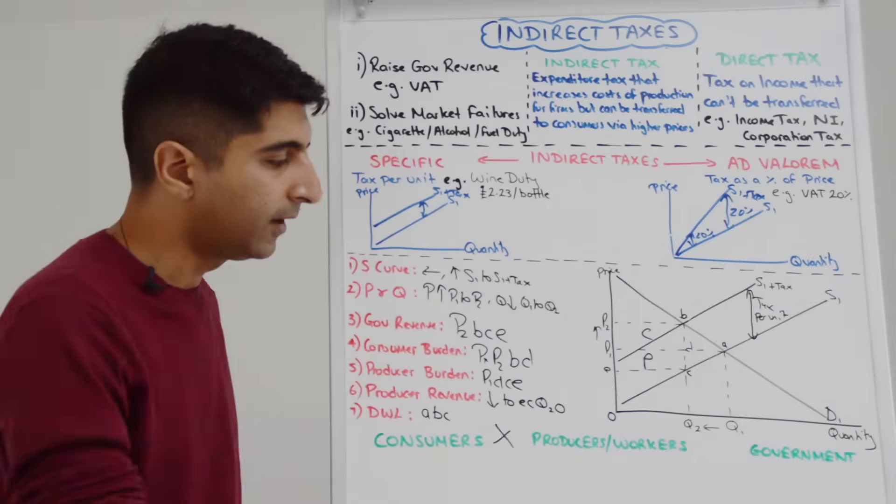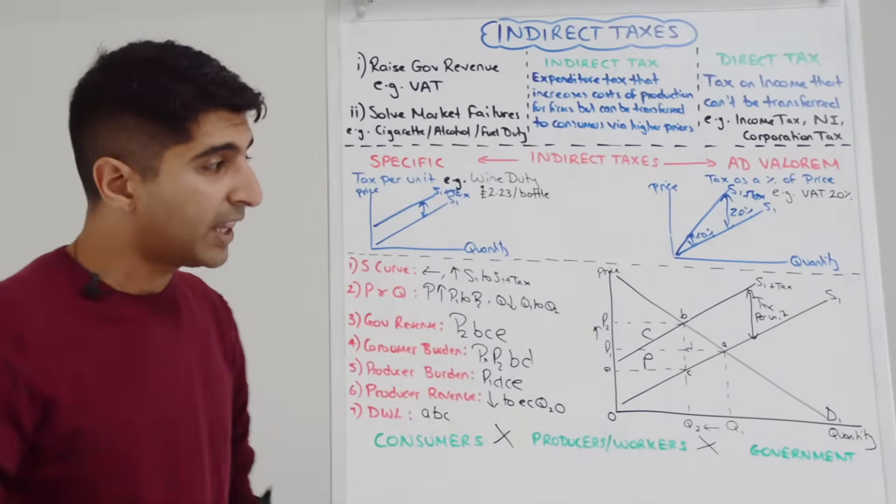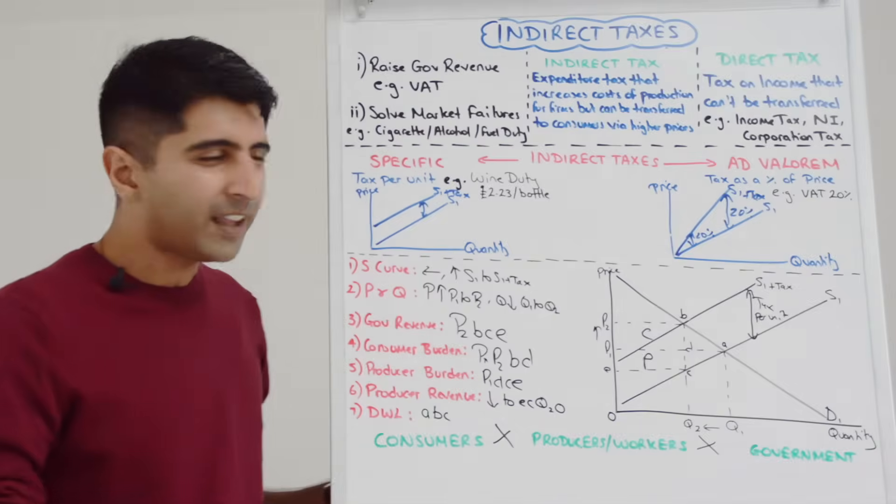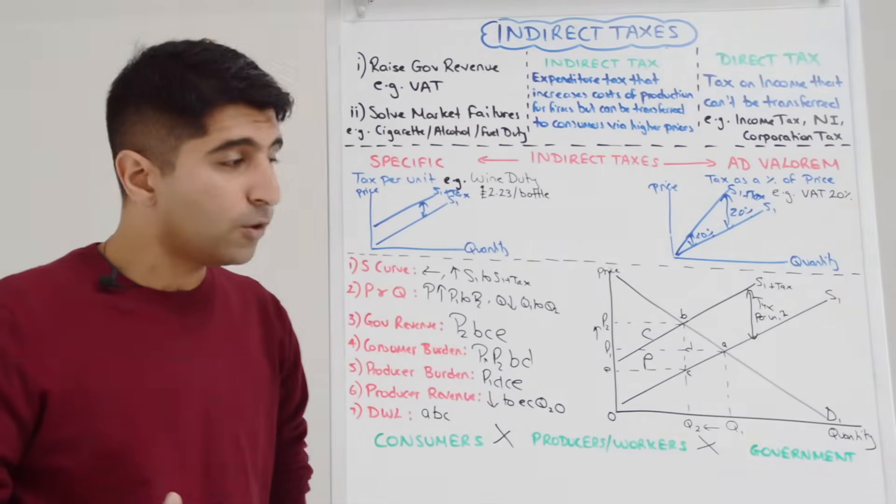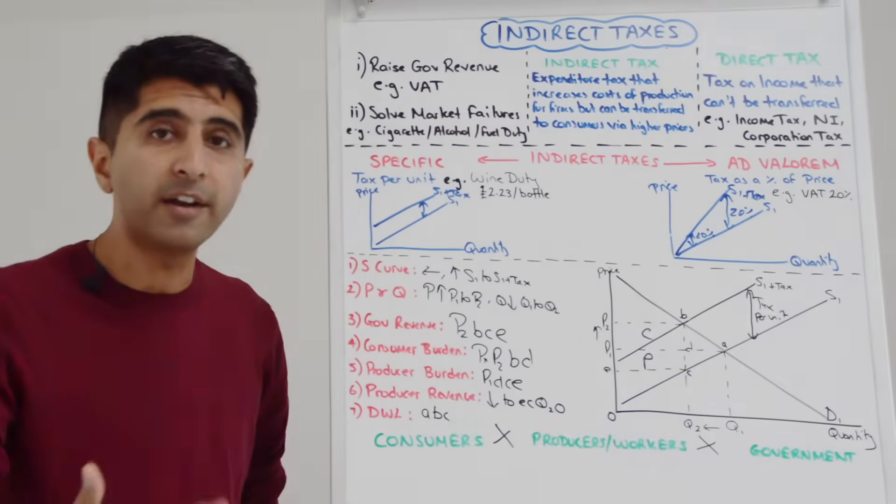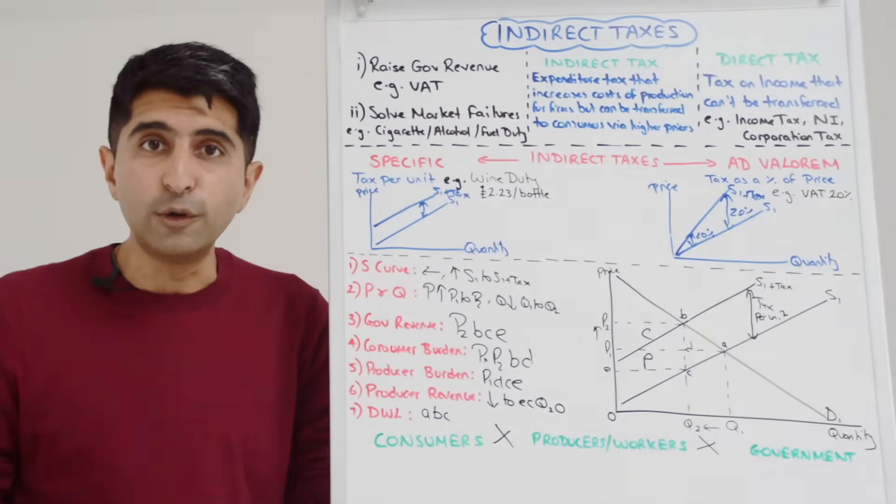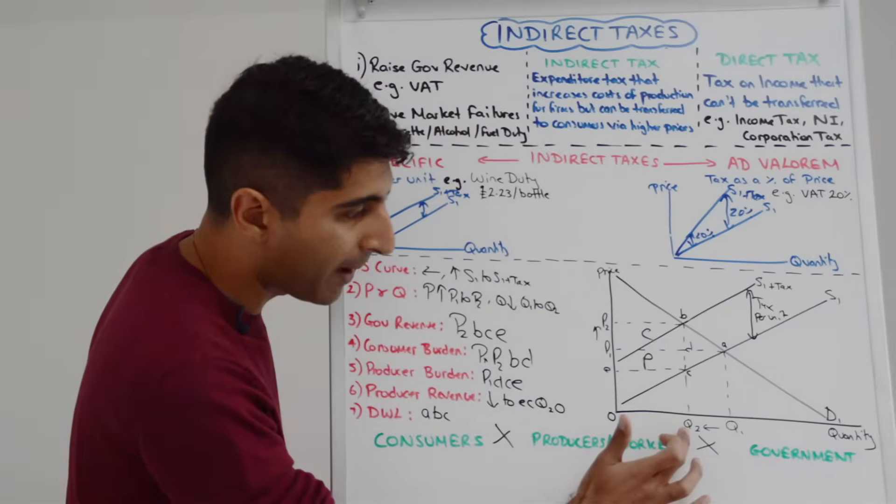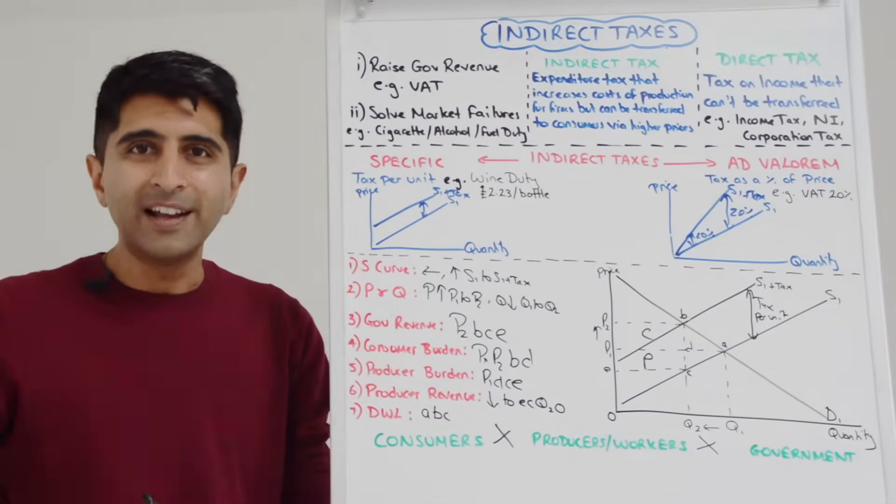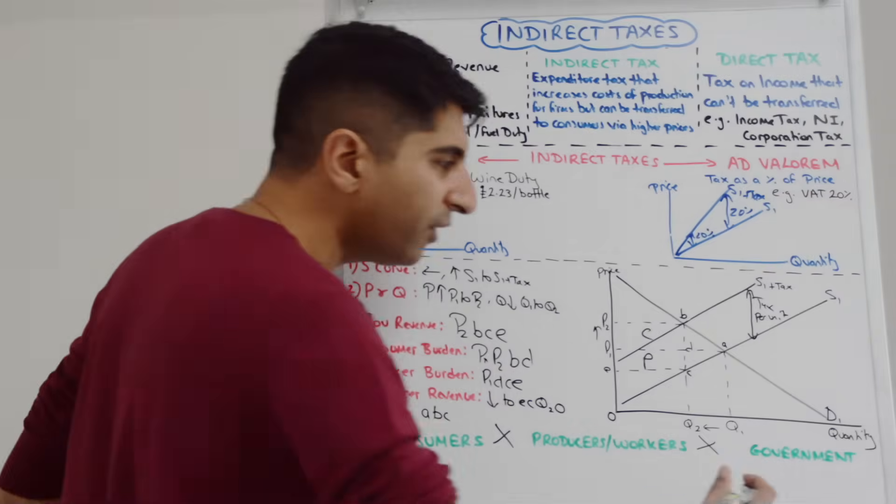What about producers and workers? They're not going to like indirect taxes either. Focus on producers, we've already said how producers are going to see lower producer revenue. In truth their producer surplus comes down as well. We can see how much they are burdened by indirect taxes. Workers too, they potentially could lose their jobs. We know labor is a derived demand and with quantity falling there is less need for workers to produce, so there is a good chance they could be harmed.